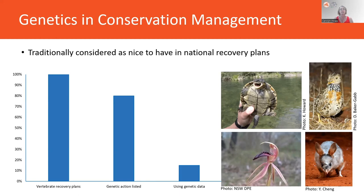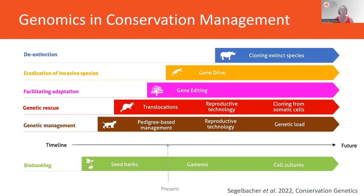There are many conversations in the literature about using genetics or genomics in conservation management. We have been biobanking for a long time — seed banks in particular, and more recently gametes and other tissues for wildlife species. We've also been using genetic management in captive breeding programs for pedigree-based management, and there's a range of genetic rescue events and translocation events informed by genetics. Genetics has also been used to facilitate adaptation, particularly gene editing in coral species for climate change, and eradication of invasive species using gene drive in mosquitoes, and potentially de-extinction or cloning of species.